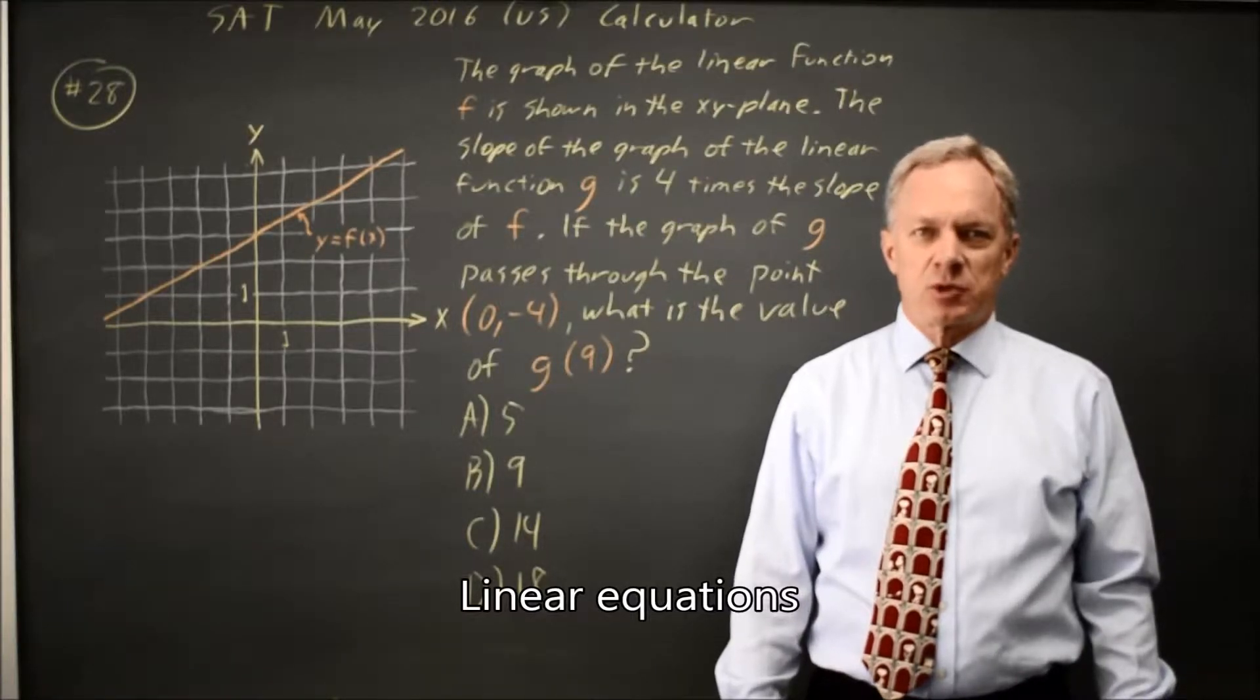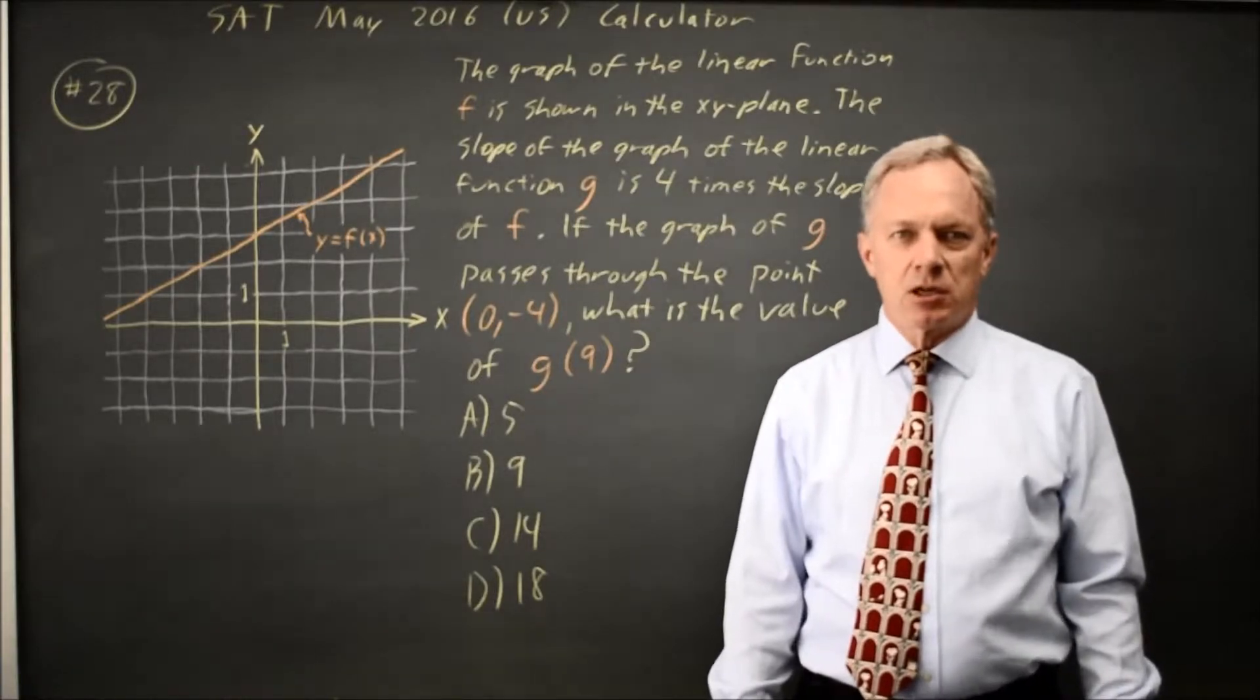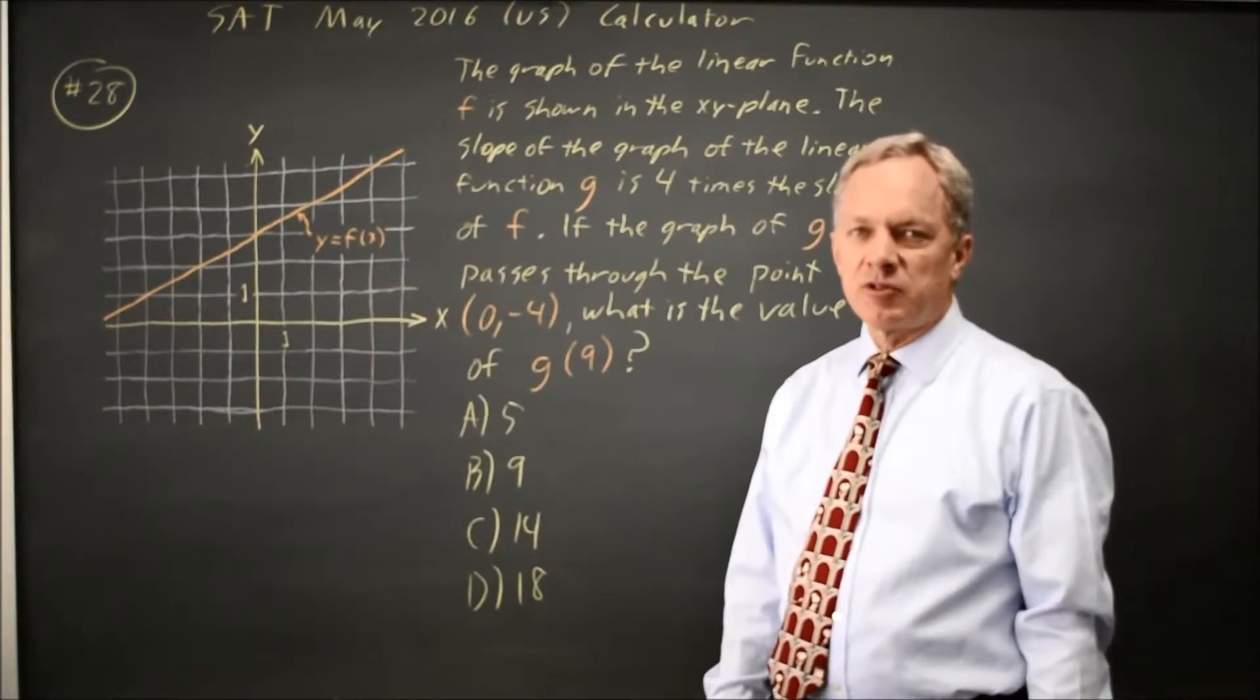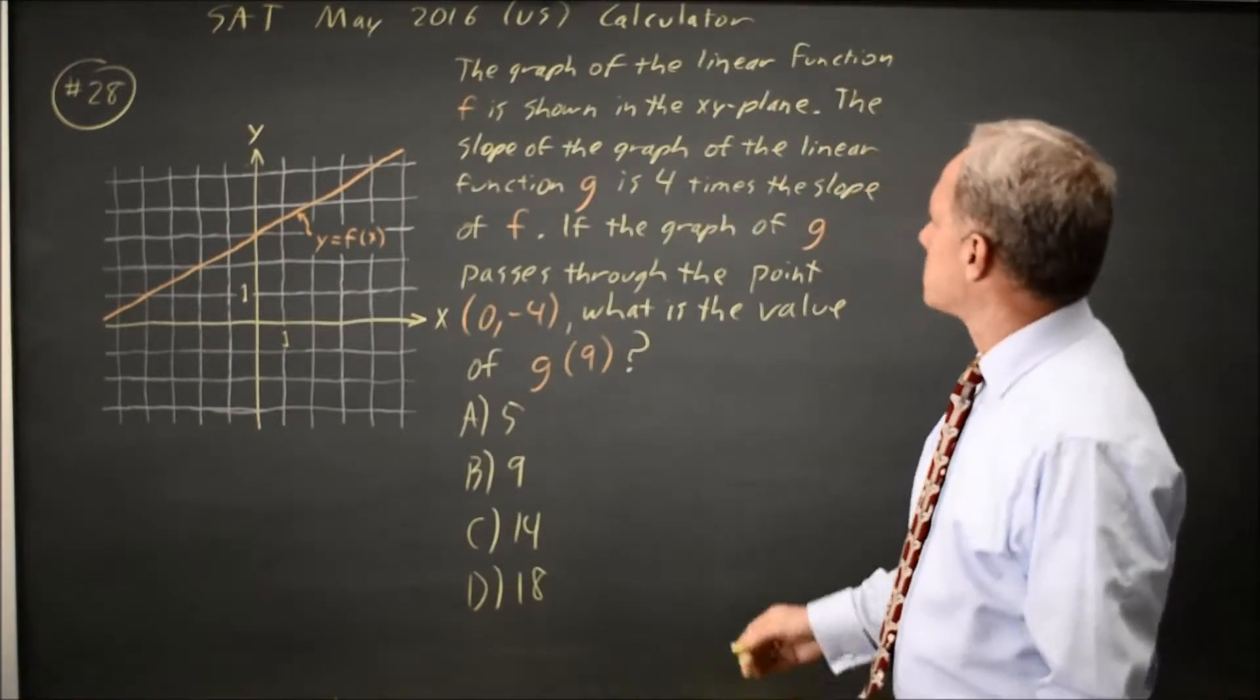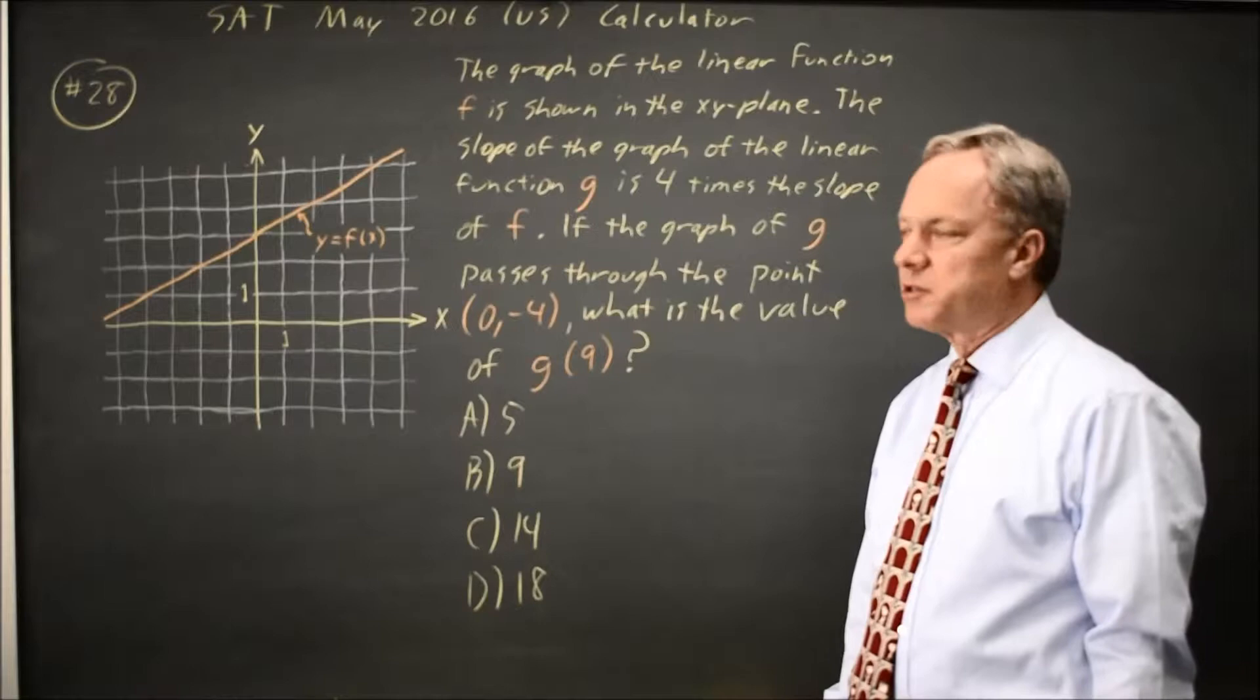This is calculator question number 28 from practice test 5, which is also the May 2016 SAT. College Board gives us the graph of a line and says the slope of a different line has 4 times the slope of this line and passes through the point (0, -4).